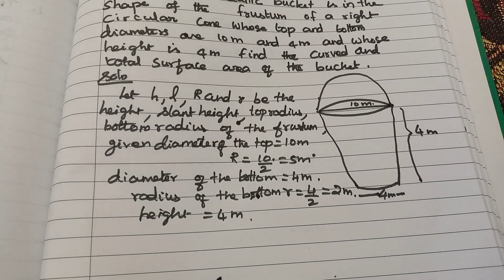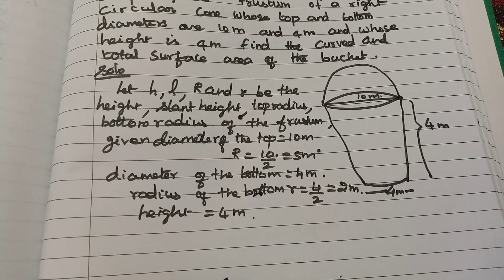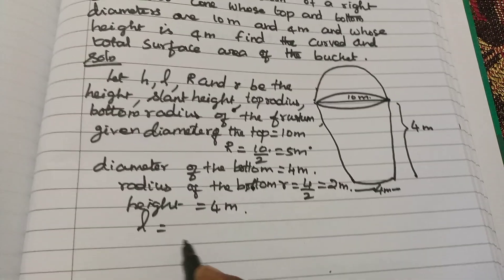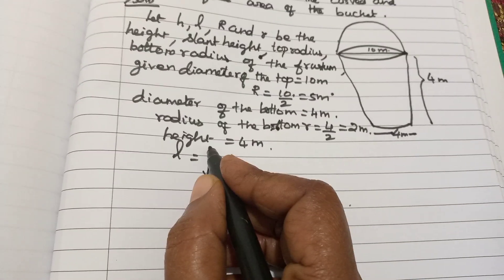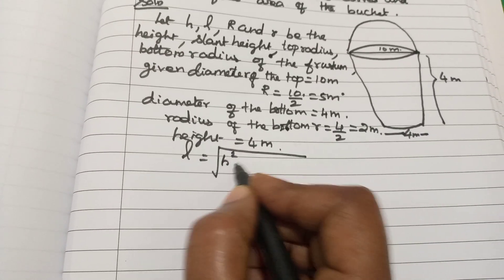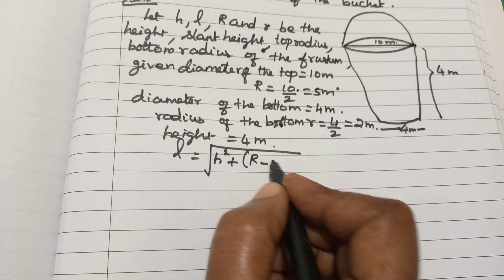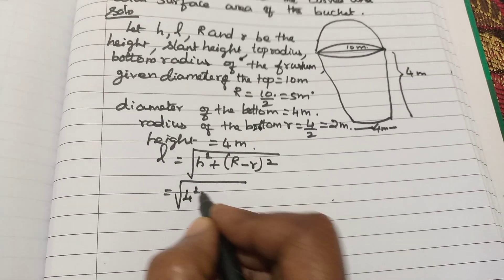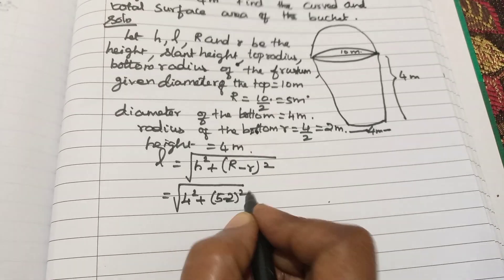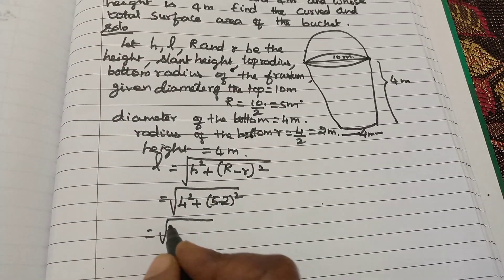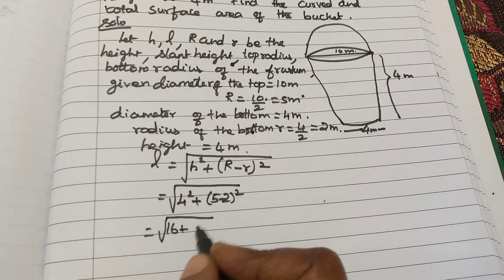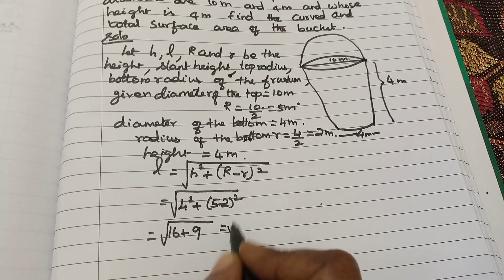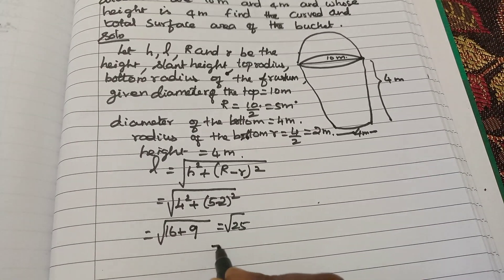Since the formula requires L, we have to find it first. The formula is L equals square root of height squared plus capital R minus small r the whole square. Which is equal to square root of 4 squared plus 5 minus 2 the whole square, equals square root of 16 plus 3 squared, equals square root of 16 plus 9, equals square root of 25, equals 5 meter.